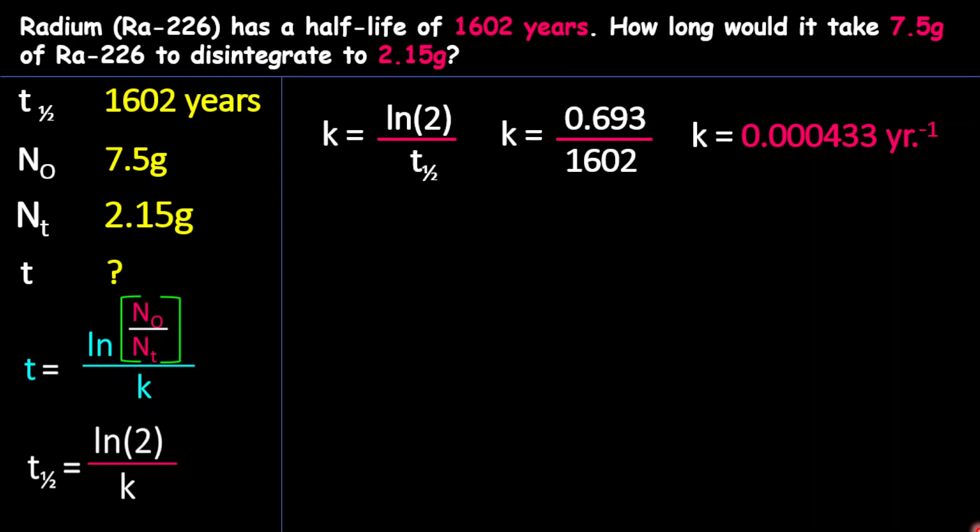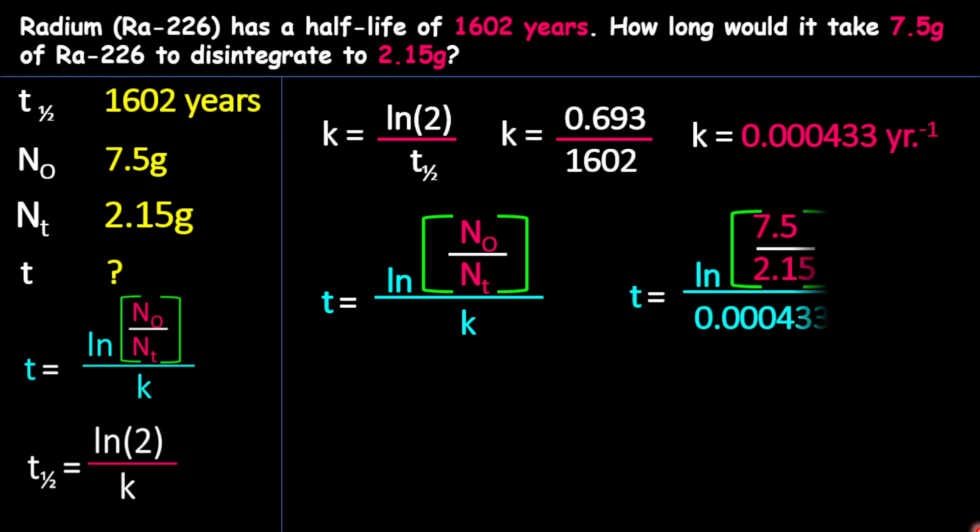Now once we have this, we can substitute that into our equation. So let's go to our next equation to find time. And so therefore, we can now plug in our values. And so what we have here is natural log of 7.5, which is the original mass, divided by the remaining mass, which is 2.15 grams. And that will all be divided by our constant rate of decay, which we already calculated.